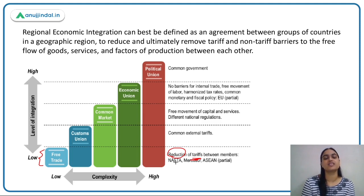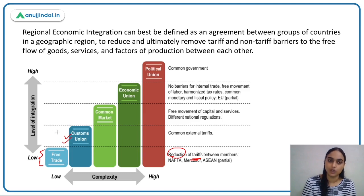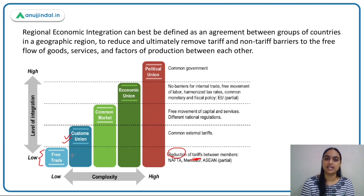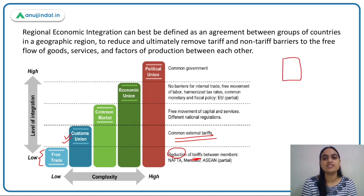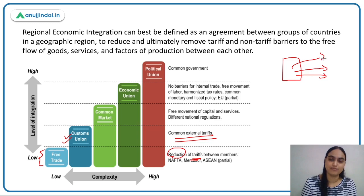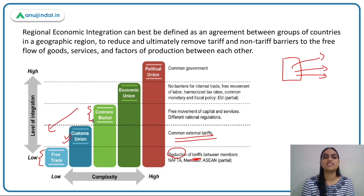The next level of integration is a customs union. Each higher level includes the features of the lower level plus an added feature. A customs union has the free trade area features — tariff barriers are reduced or removed among members — plus the additional feature of a common external tariff. Members will have reduced or removed tariff barriers among themselves, but with external partners they maintain a common tariff policy.